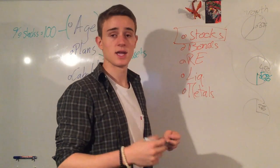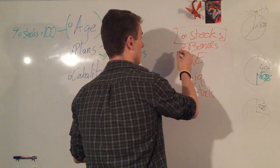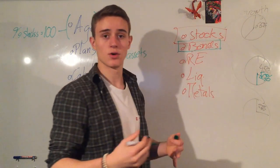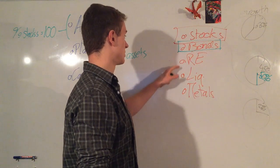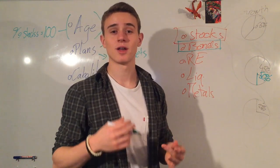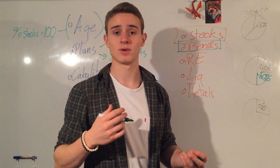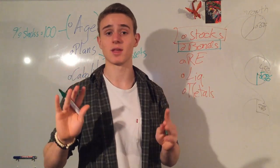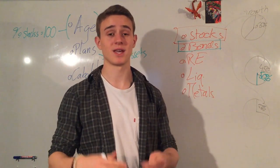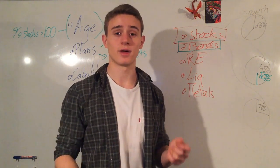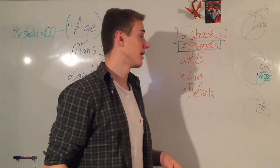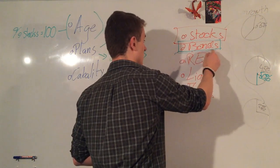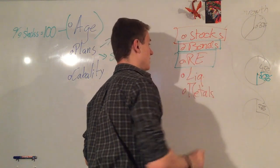If you want a stable, consistent stream of revenue, bonds are the ones to go for. But don't misunderstand — there are types of bonds that are very risky and will have high rewards. Another stable source of income is real estate.